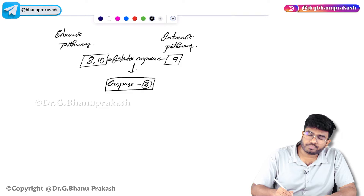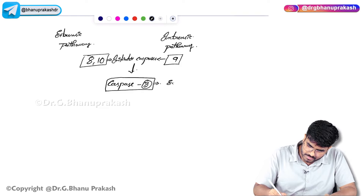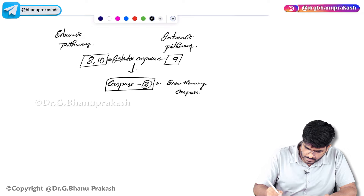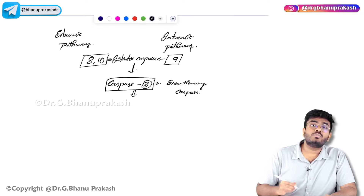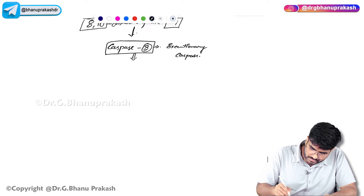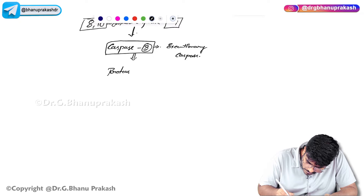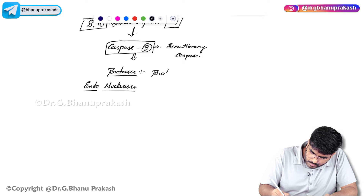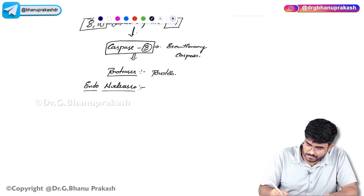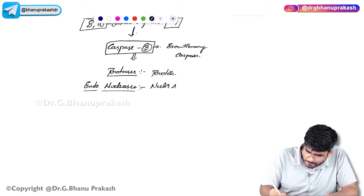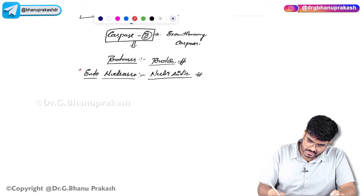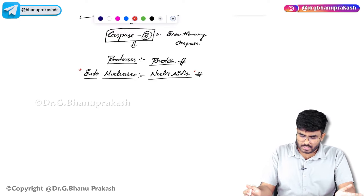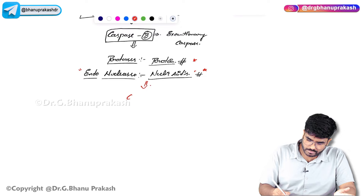Caspase number 3 is the real hero — it is the executioner caspase. This executioner caspase 3 activates proteases and endonucleases inside the cell. The proteases go and destroy the proteins within the cell, while the endonucleases break down the nucleic acids. Because of these proteases and endonucleases, the cells will die — there will be cell death.